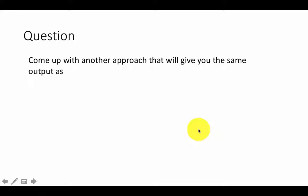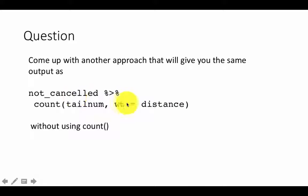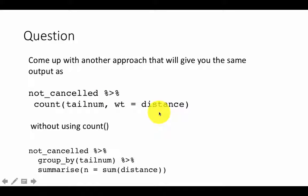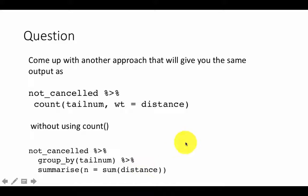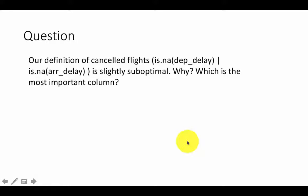Come up with another approach that gives the same output as the weighted tail number distance — in other words, the total number of miles flown by each tail number. Any counting or summing will use `summarize()`. You group by tail number and then summarize by summing the distance: `sum(distance)`. That will effectively give you the same answer. You can run it and see what is going on.